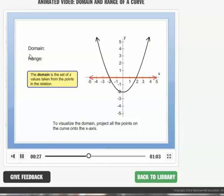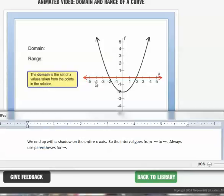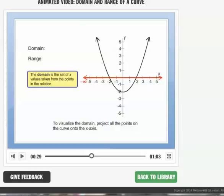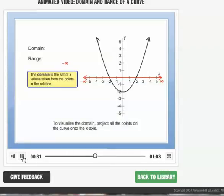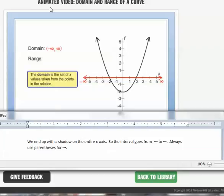Then the graph would extend forever in both directions. We end up with a shadow on the entire x-axis, so the interval goes from negative infinity to positive infinity. Always use parentheses for infinity.